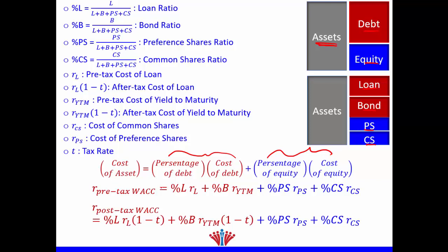Therefore, our pre-tax WACC — before-tax weighted average cost of capital — would be: the percentage of loan (market value of loan divided by market value of loans plus bonds plus preference shares plus common shares) multiplied by the cost of the loan (the interest rate on the loan), plus the percentage of the bond (market value of bond divided by market value of loans plus bonds plus preference shares plus common shares) multiplied by the cost of the bond.